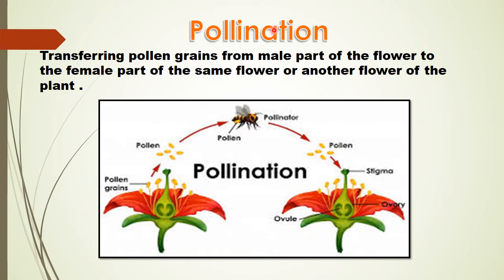Pollination is one of the methods to transfer pollen grains from the male part of the flower — that is the stamen — to the female part, which is the carpel or pistil, of the same flower or another flower of the plant.